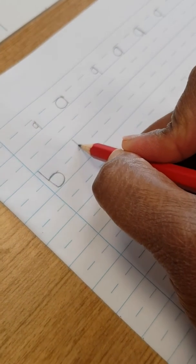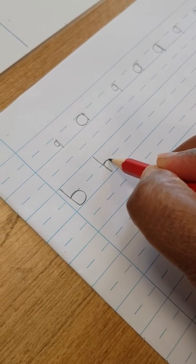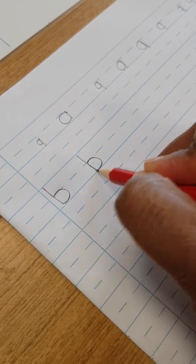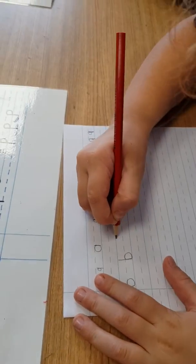So it's a tall stick going down from the top line to the bottom, only halfway up to the broken line and a round belly. Do you remember the joke I told you about the belly? Try and use your finger spaces.